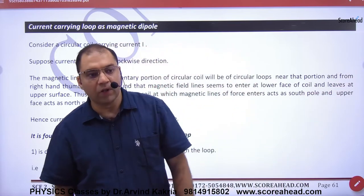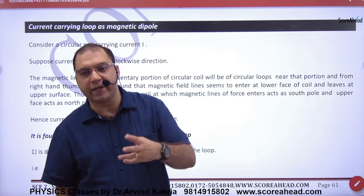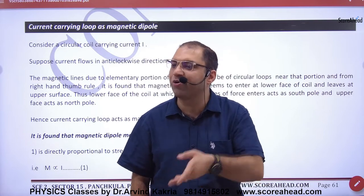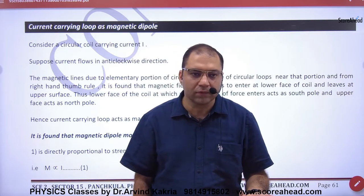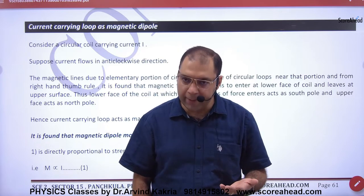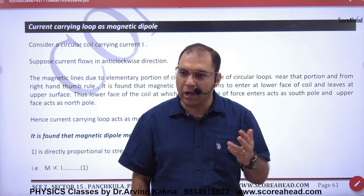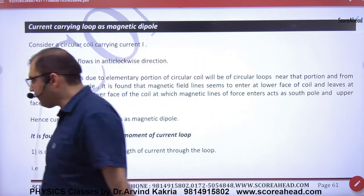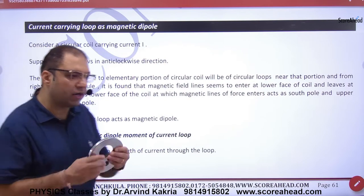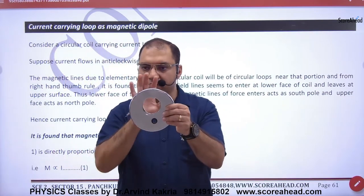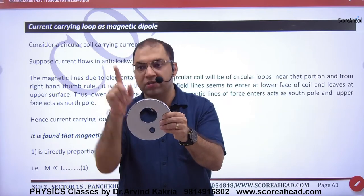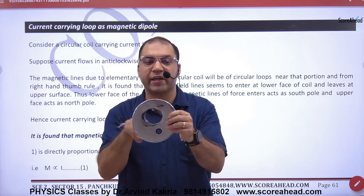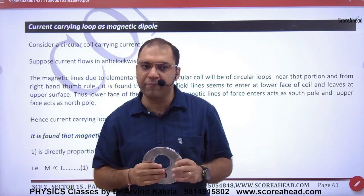If a current-carrying loop acts like a magnet, then it will have poles. We will show poles north and south. So we have to make imaginary poles because it has B generated. If the current is clockwise, that face acts like a south pole. If the current is anticlockwise, that face acts like a north pole. So one way the pole is south, the other way the pole is north.